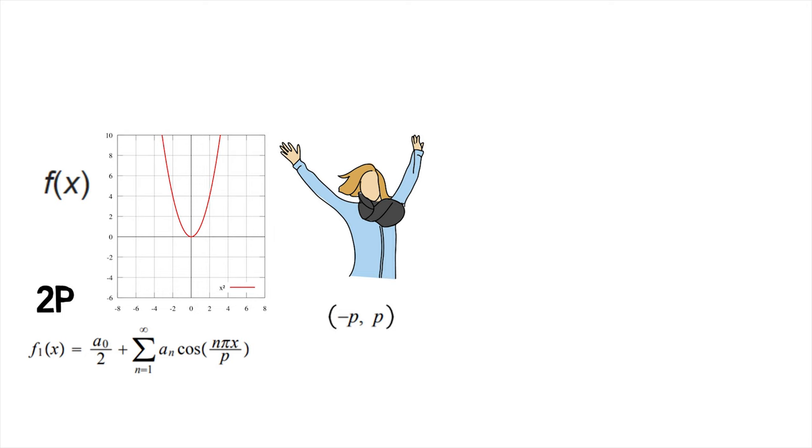plus summation of a_n into cos of n pi x upon p from n equals 1 to infinity, where a naught equals 2 upon p into integral of f of x dx from 0 to p